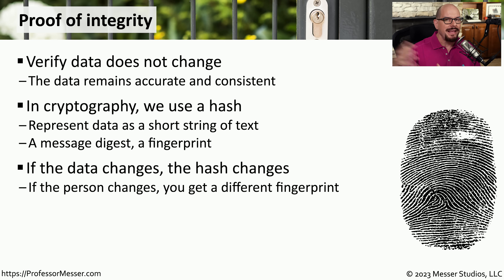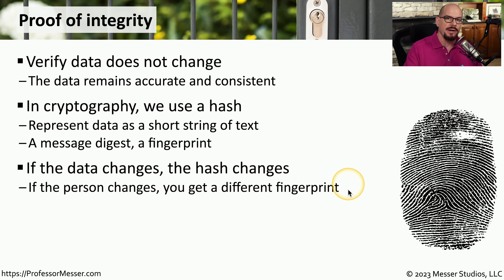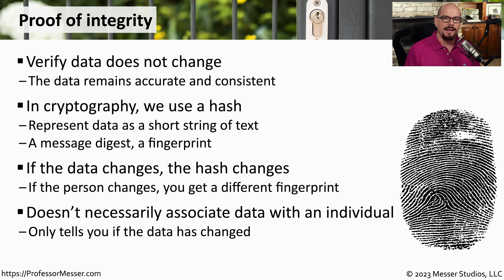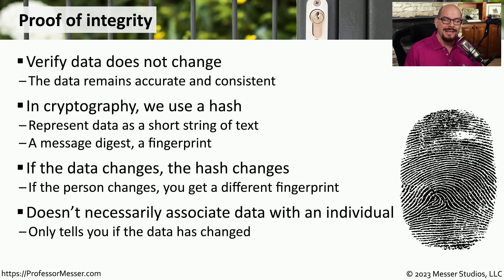If anything changes with that data, we'll have a different fingerprint or a different hash — the same as an actual fingerprint. If the person changes, the fingerprint will be very different. Although a hash is very good at verifying the integrity of data, it doesn't associate that data with a particular individual. We can verify the data received is exactly the same as what was sent, but we can't verify who sent it. There are ways to provide that additional integrity, which we'll talk about in a moment.